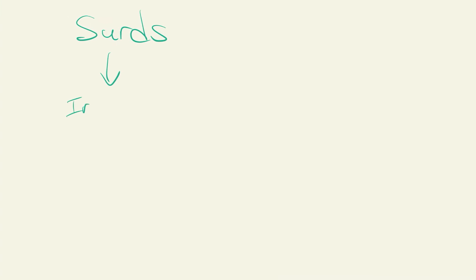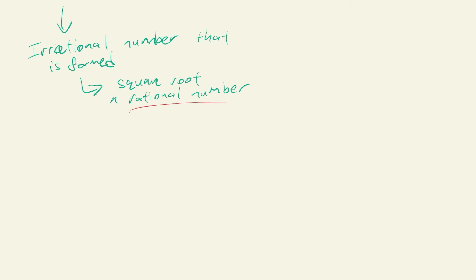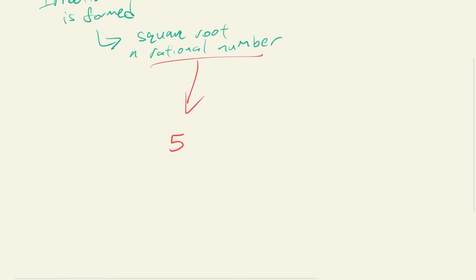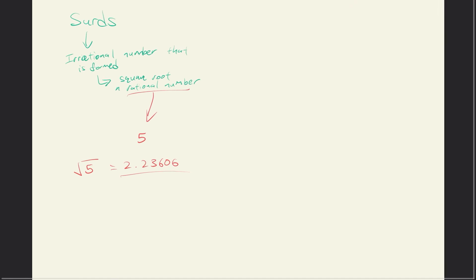A surd is an irrational number that is formed when you square root a rational number. For example, five is a rational number, and if I square root five I get the irrational number 2.23606.